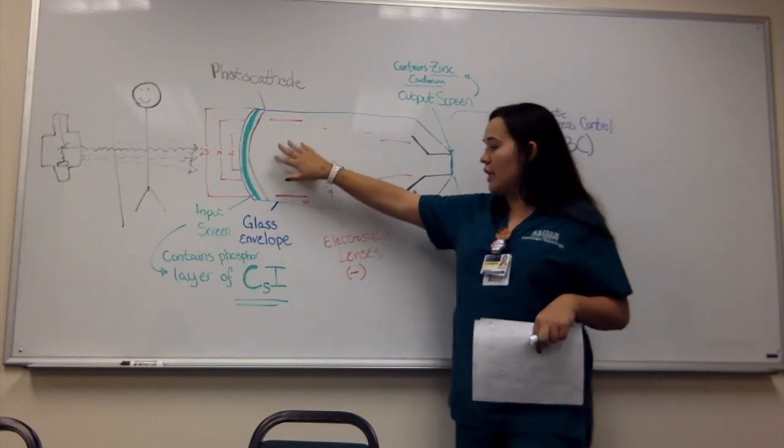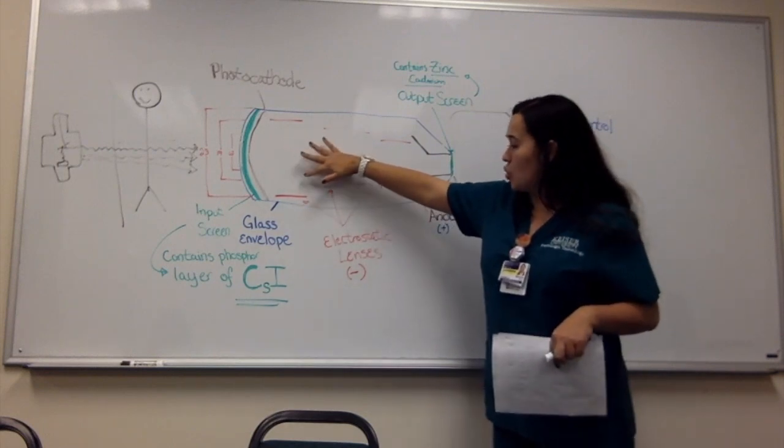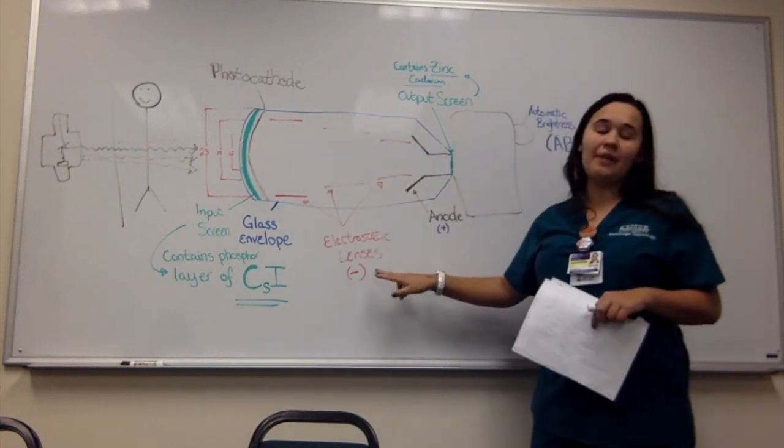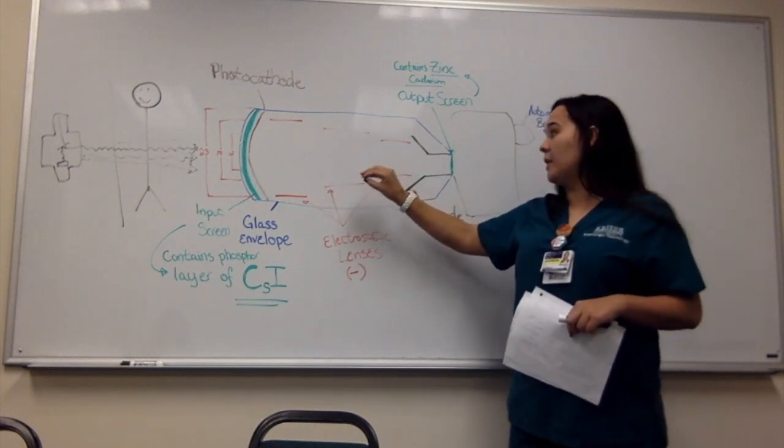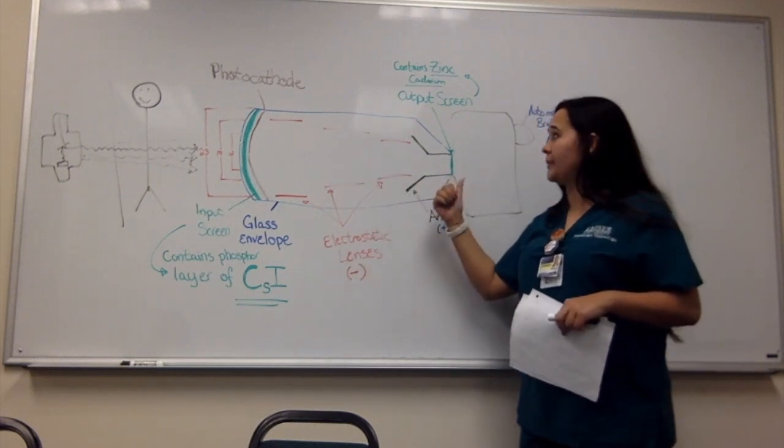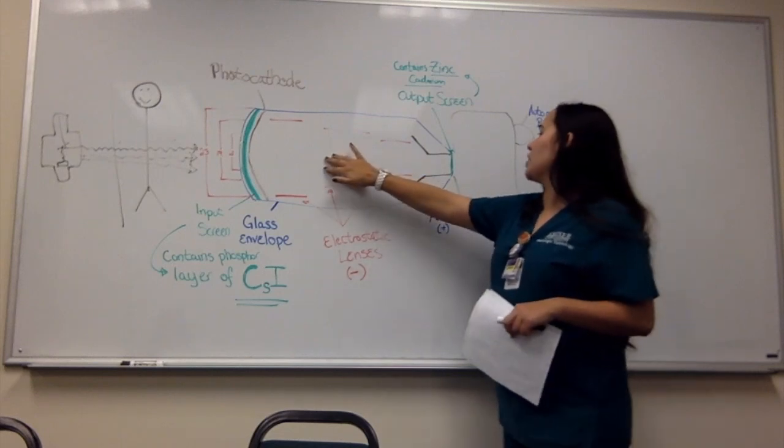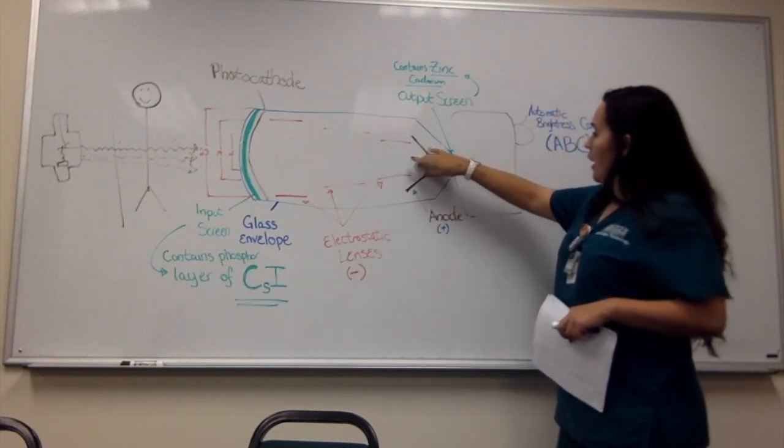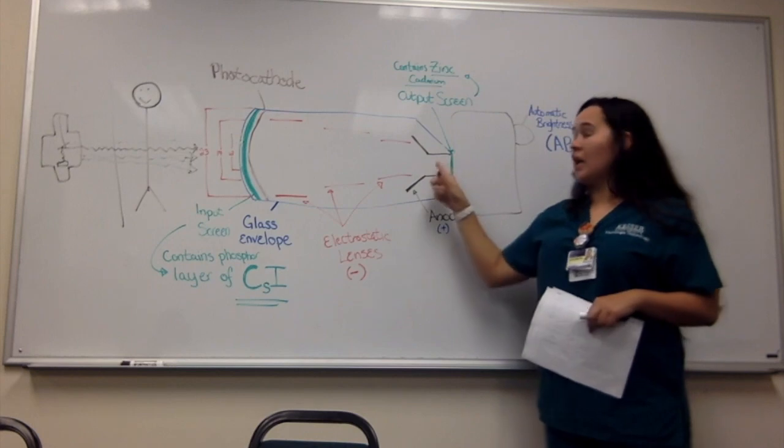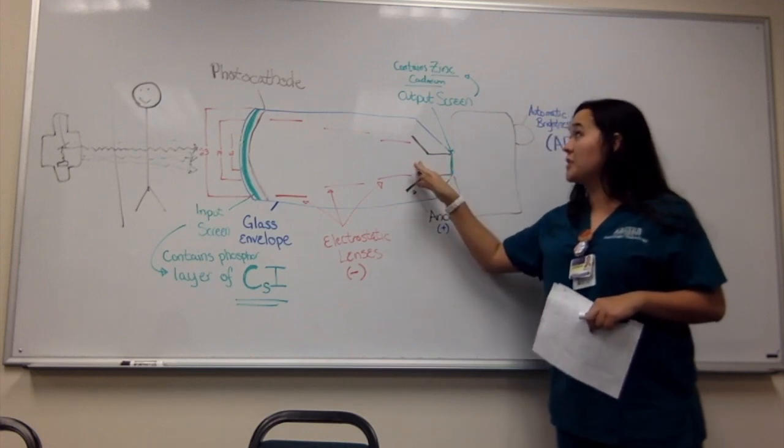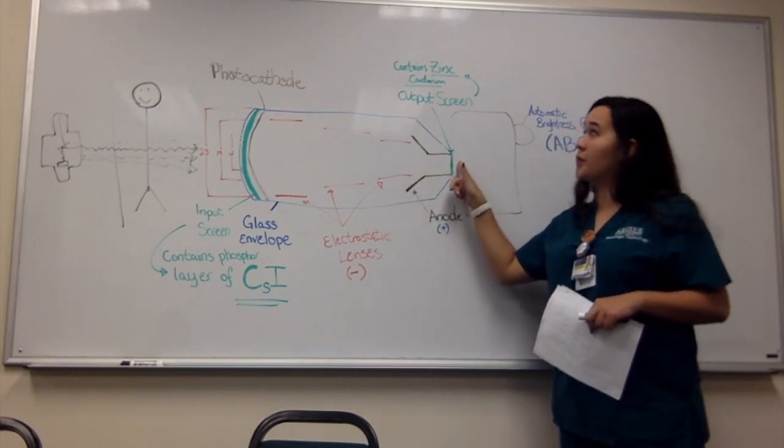So once the electrons are inside, it goes towards electrostatic lenses, which have a negative charge. This speeds up the electron beam towards the output screen. So once the electrons start speeding over here, they go through the anode. The anode has small little holes for the electrons to pass through to the output screen.